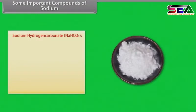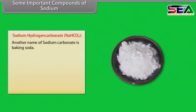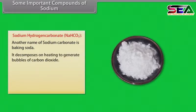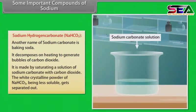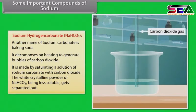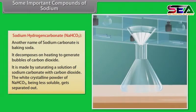Another name of sodium hydrogen carbonate is baking soda. It decomposes on heating to generate bubbles of carbon dioxide. It is made by saturating a solution of sodium carbonate with carbon dioxide. The white crystalline powder of NaHCO₃, being less soluble, gets separated out.